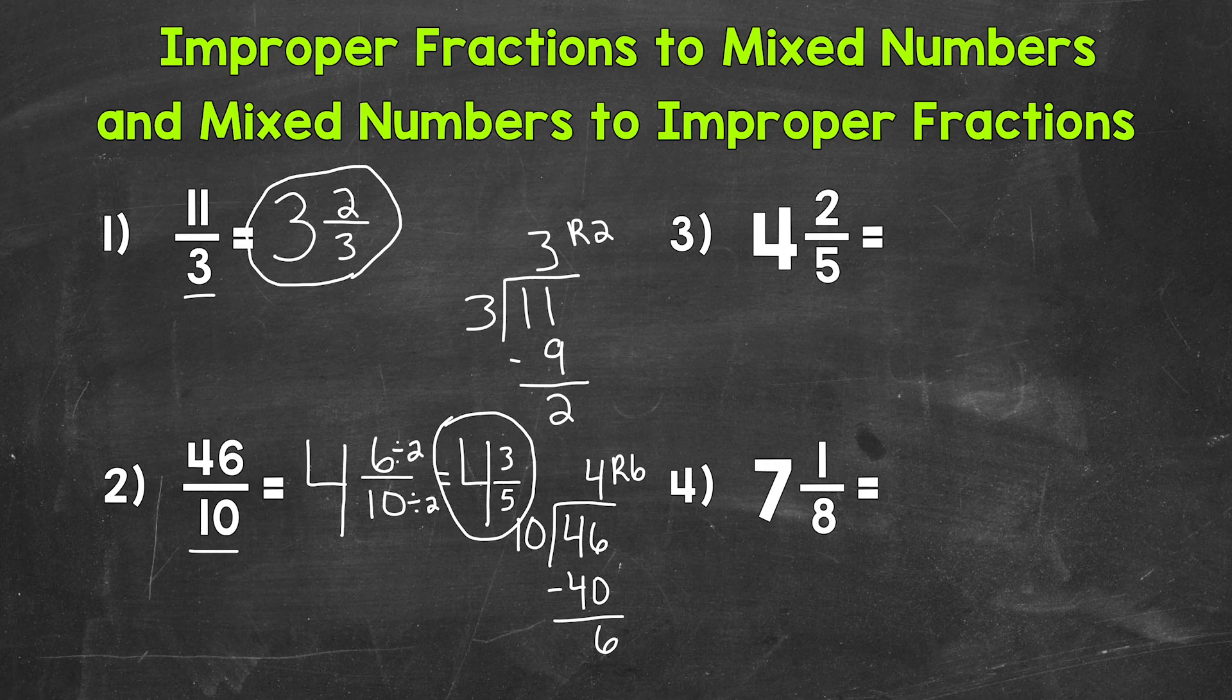Let's move on to numbers 3 and 4, where we have mixed numbers, and we are going to convert them to improper fractions. And we do this by multiplying and then adding. So I'll show you the process first, and then show you how and why it works. So we start at the bottom and work our way up. We multiply, and then add.